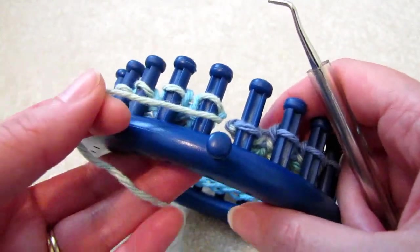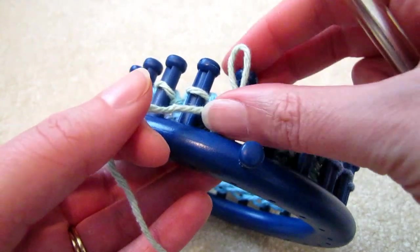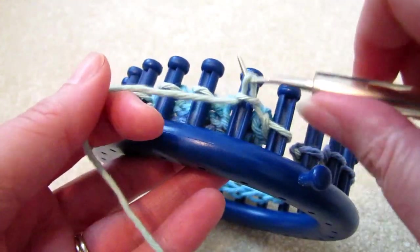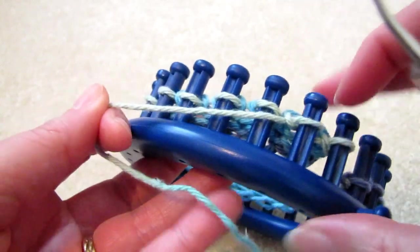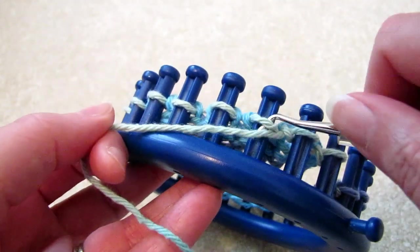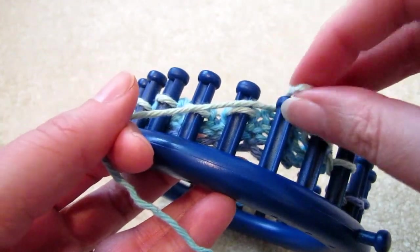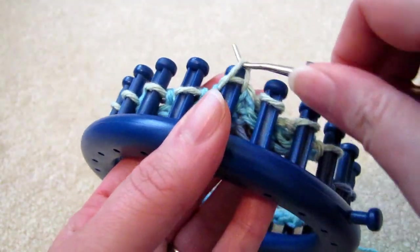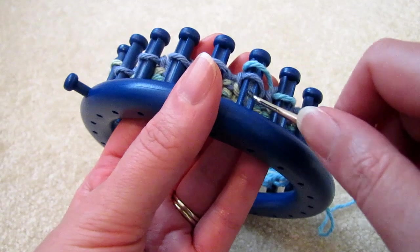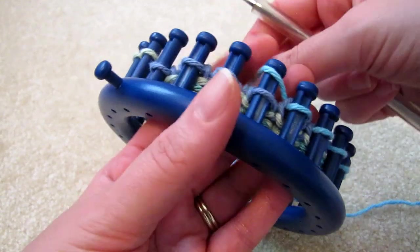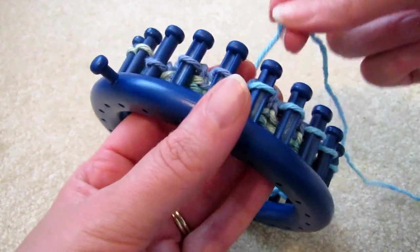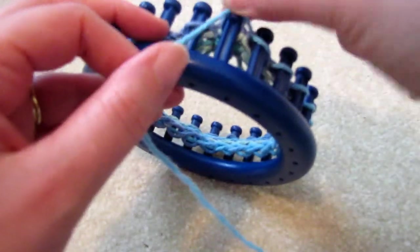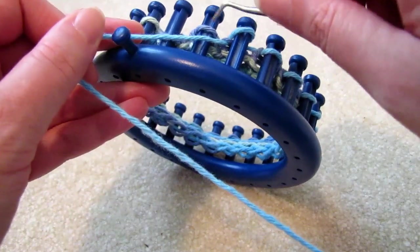The seventh row and every odd row from now on: purl three, just three. And then knit until the last three stitches. Okay, only three left, so the last three purl again. So do this for every odd row.